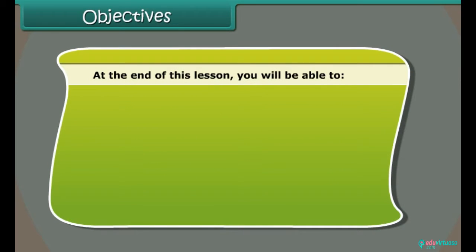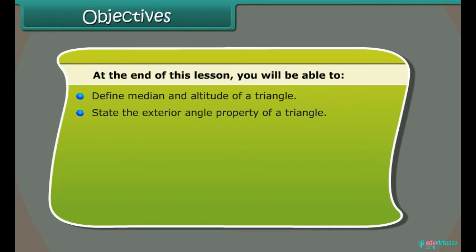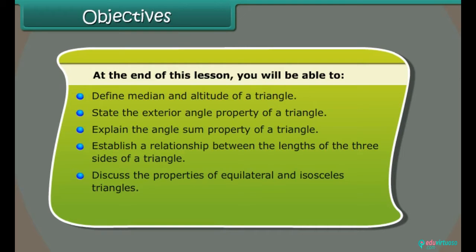At the end of this lesson, you will be able to: define median and altitude of a triangle; state the exterior angle property of a triangle; explain the angle sum property of a triangle; establish a relationship between the lengths of the three sides of a triangle; discuss the properties of equilateral and isosceles triangles; and explain the Pythagoras property of a right-angled triangle.